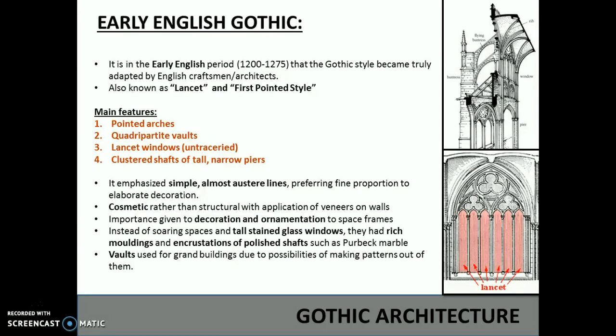The Early English Gothic style. It is the Early English period that the Gothic style became truly adapted by English craftsmen and architects, also known as the lancet and first pointed style. The main features were the pointed arches, the quadripartite vaults, lancet windows and clustered shafts of tall narrow pipes. It emphasised simple, almost austere lines, preferring fine proportion to elaborate decoration.